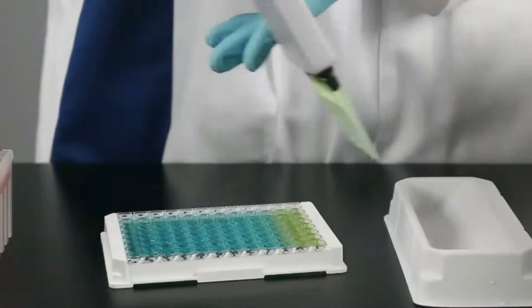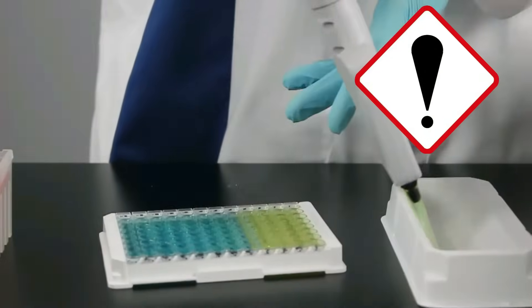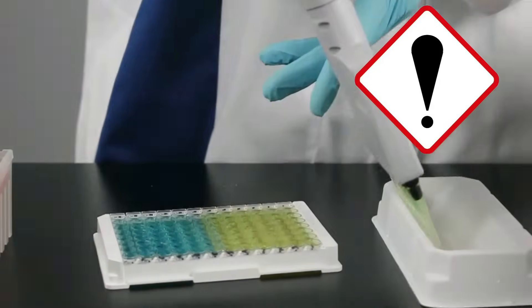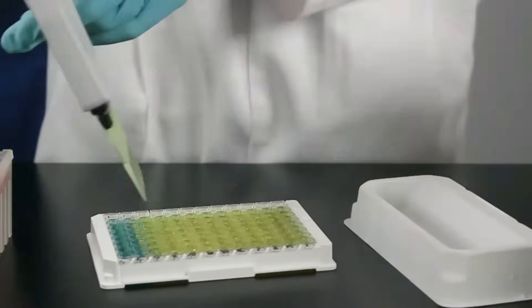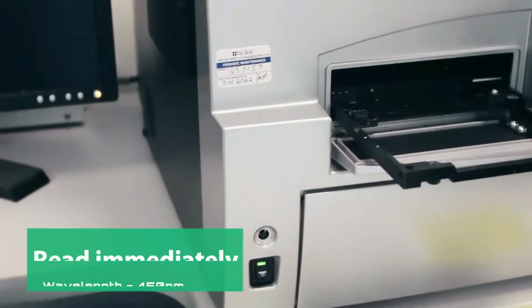To stop the reaction, add 50 microliters of stop solution. Be careful, it is sulfuric acid. This reaction will turn the solution from blue to yellow. It is important to read immediately, as too long of a reaction can cause precipitance.